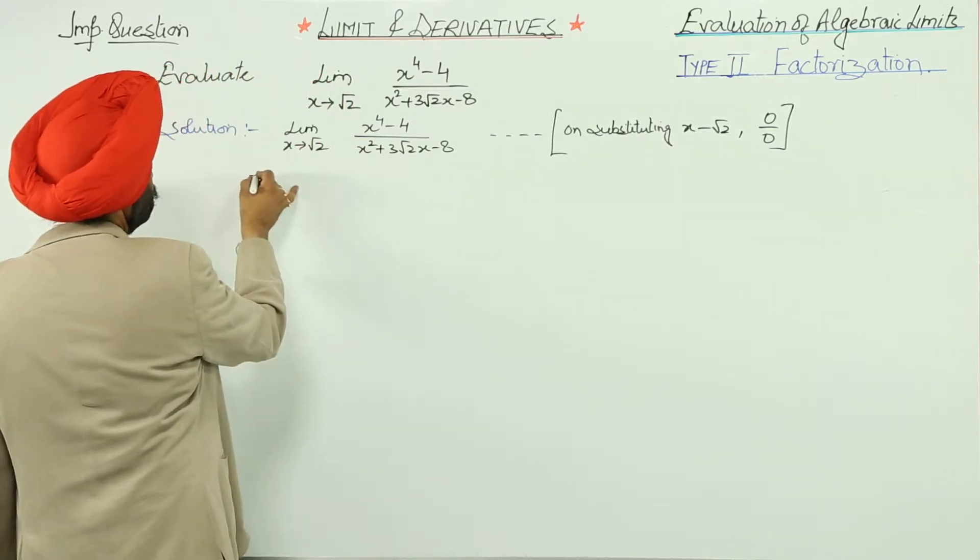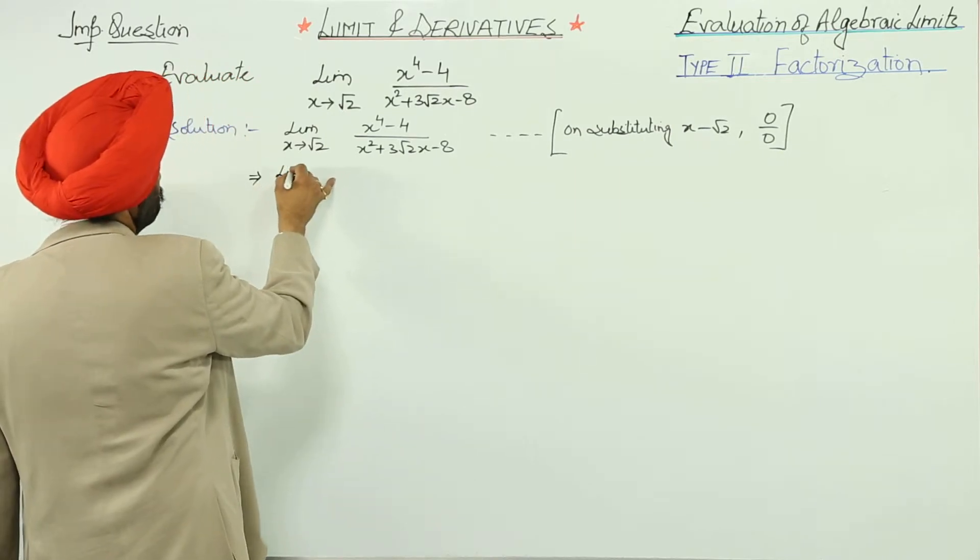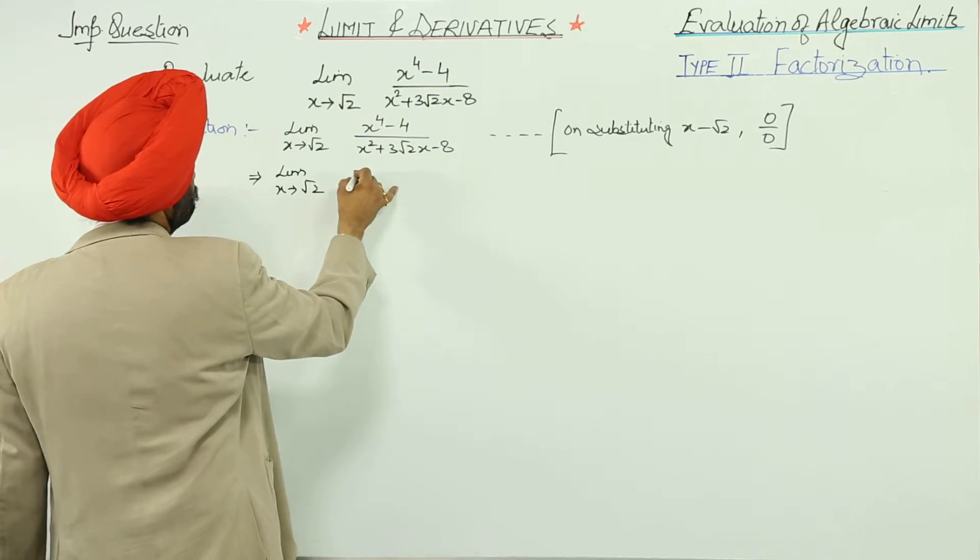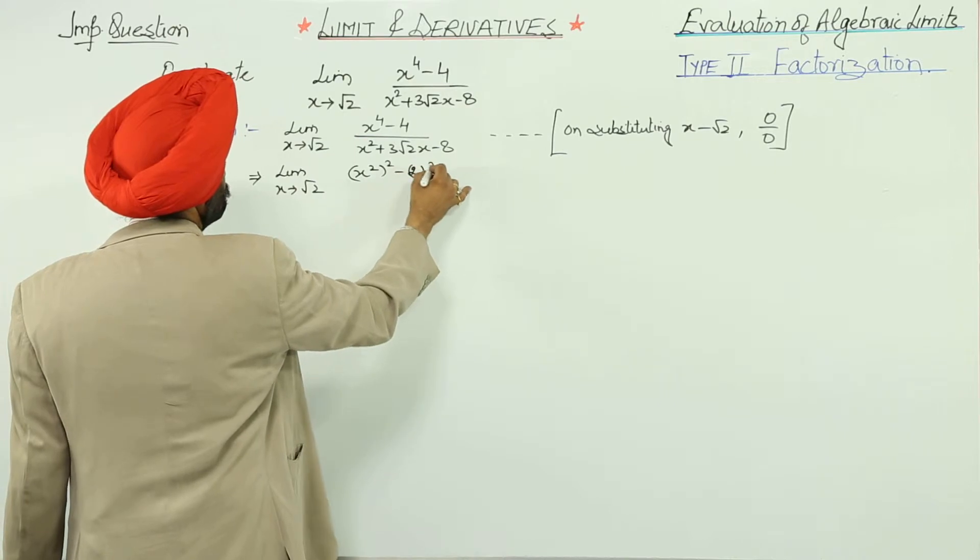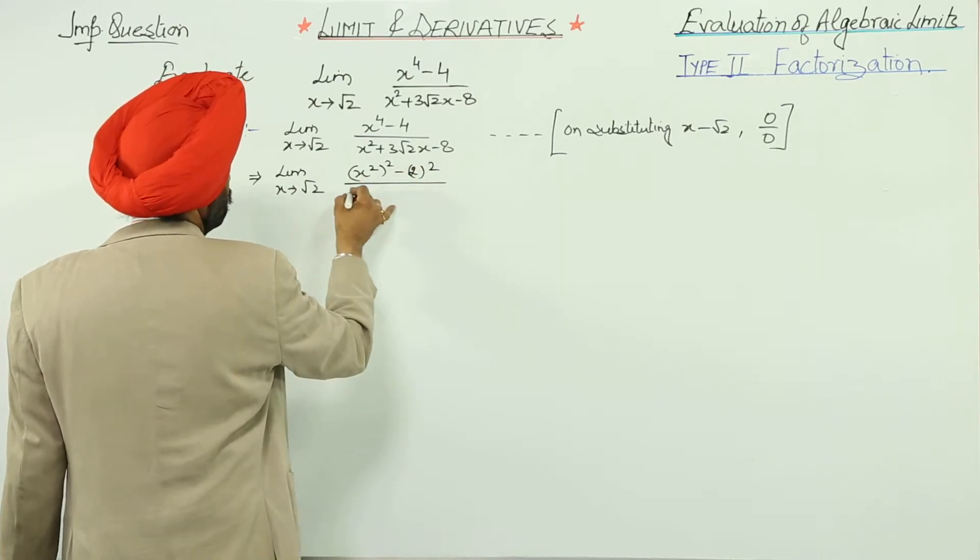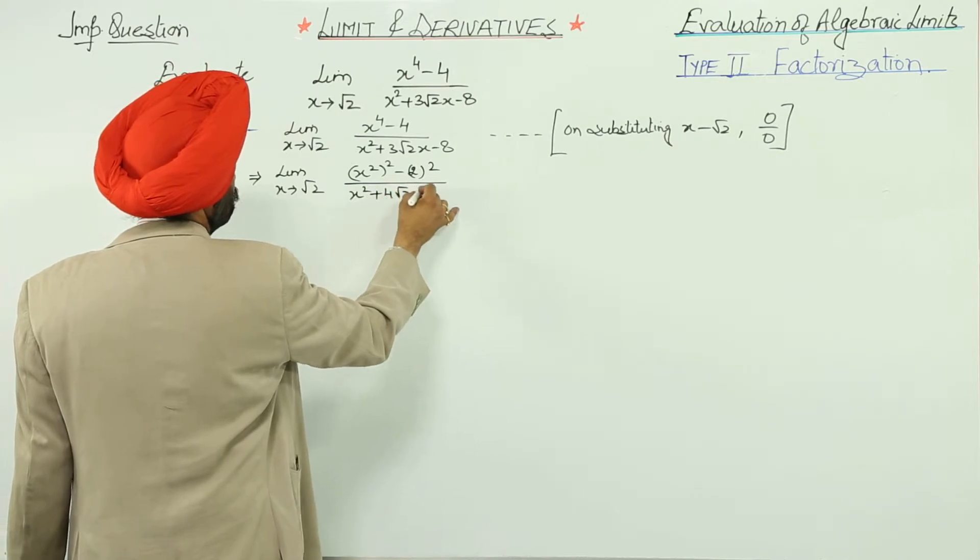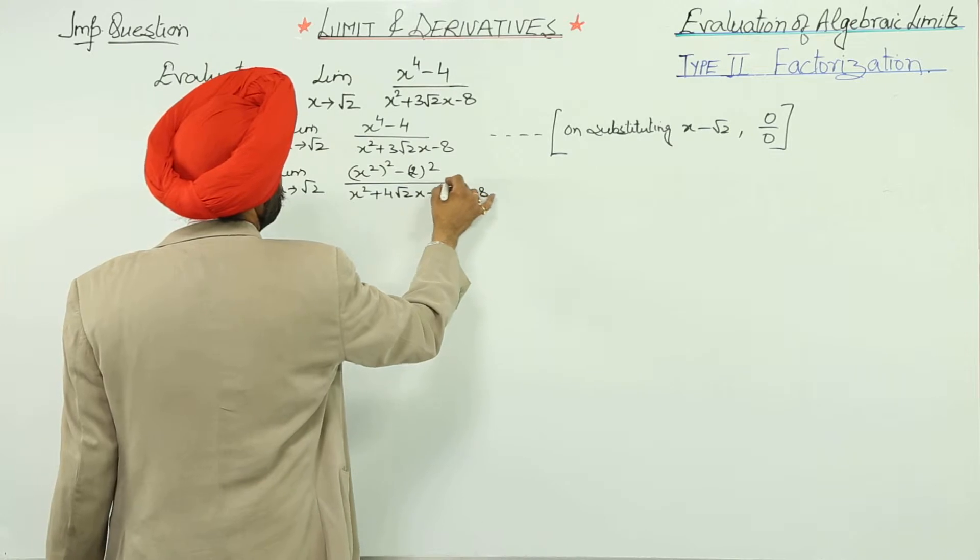So when it is 0 upon 0, we can factorize it. Now limit x approaches to root 2: x square whole square minus 2 whole square upon x square plus 4 root 2x minus root 2x minus 8.